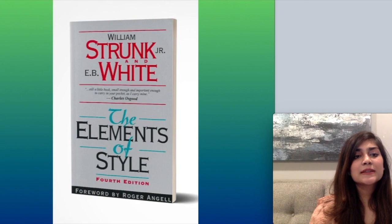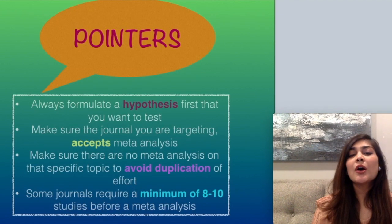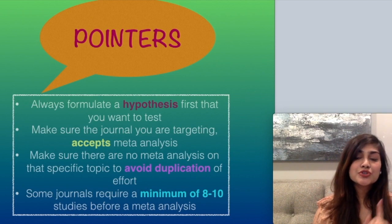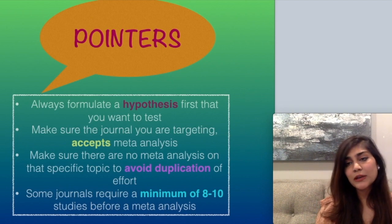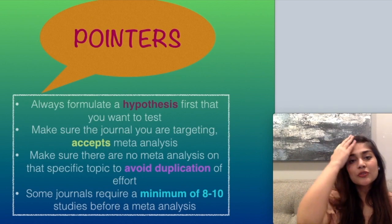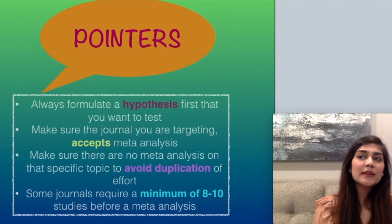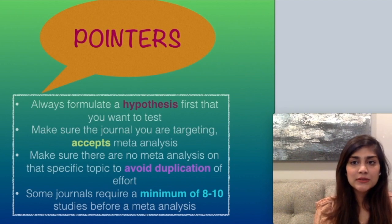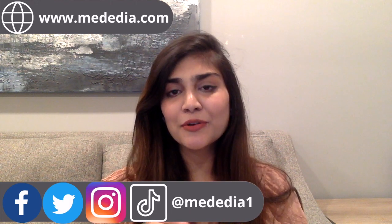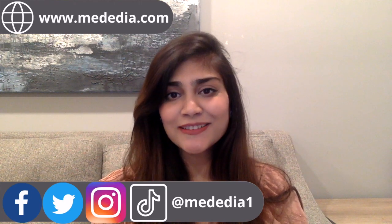A few final pointers: always formulate a hypothesis first. Make sure the journal you're targeting accepts systematic reviews or meta-analyses. Make sure there are no existing meta-analyses on that specific topic to avoid duplication of effort. And meta-analysis cannot be done with just three to four articles — a minimum of eight to ten studies may be required. Thank you so much for watching. If you have any more questions, please let us know in the box below. Please subscribe to our channel and keep watching.